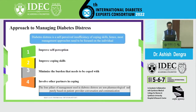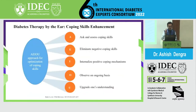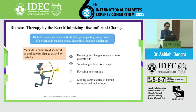Self-care is very important — patients must be trained for self-care, healthy dietary habits, exercise, self-monitoring of glucose, and adherence to injectable or oral therapy. The AEIOU approach for therapy involves: Ask and assess coping skills (A), Eliminate negative coping skills (E), Internalize positive coping mechanisms (I), Observe on an ongoing basis (O), and Upgrade one's understanding (U). To minimize discomfort of change, break changes into discrete bits, prioritize action, focus on essential parts, and make full use of human resources and technology.